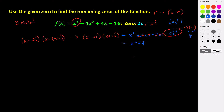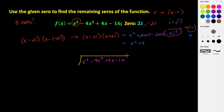Now we can find the last zero by doing polynomial long division. We have x cubed minus 4x squared plus 4x minus 16, and we are going to divide all of this by x squared plus 4.